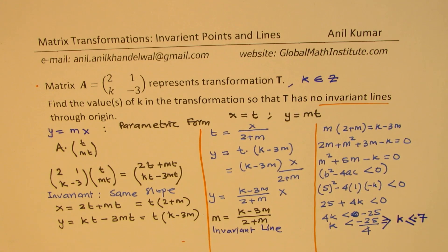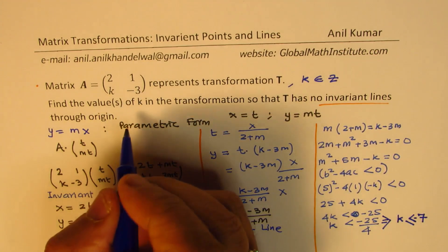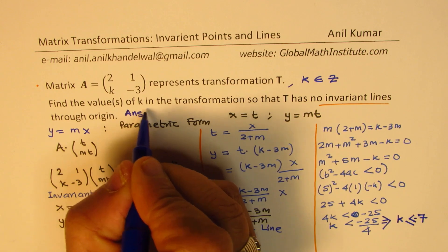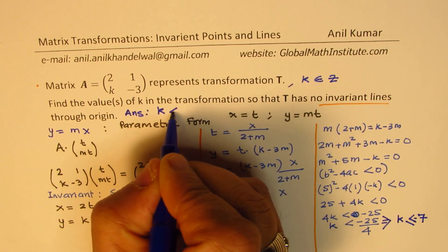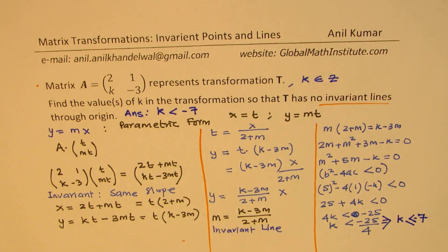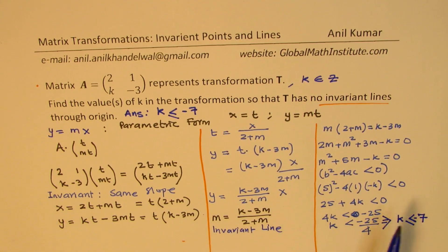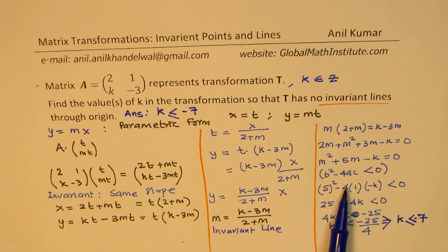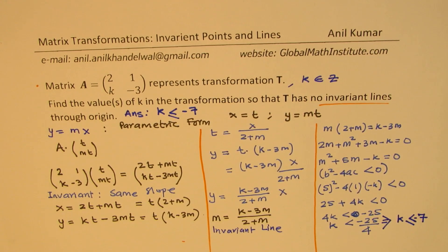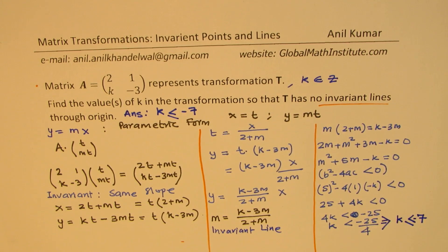Perfect. So we get that the value of k here is, so our answer here is that k is less than or equal to minus 7. It could be minus 7 also, since if I put here minus 7, then 7 times 4 is 28, and 25 minus 28 will be less than 0. Does it make sense?